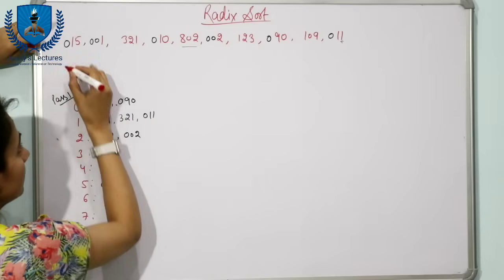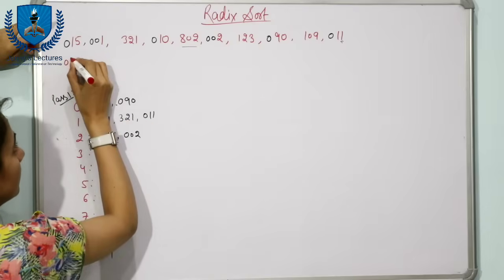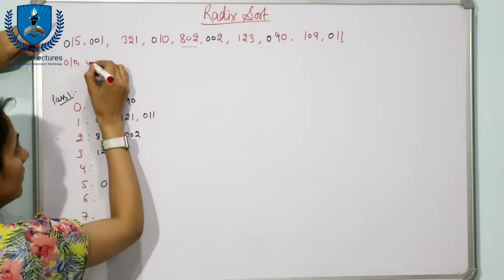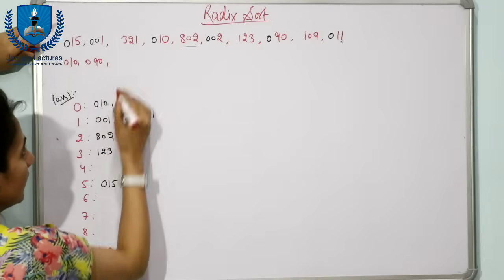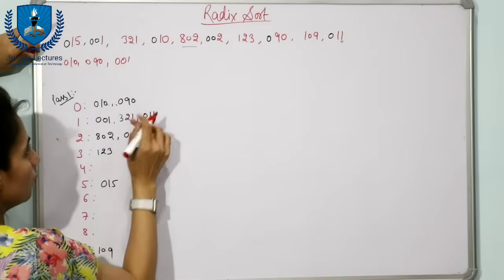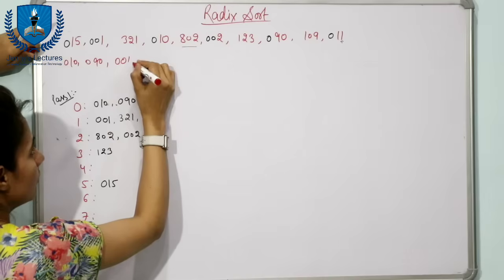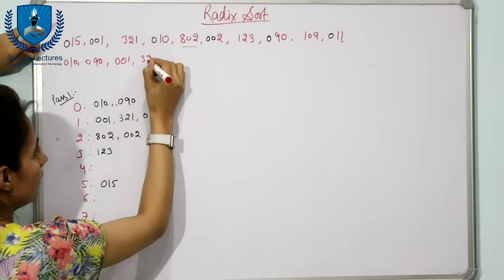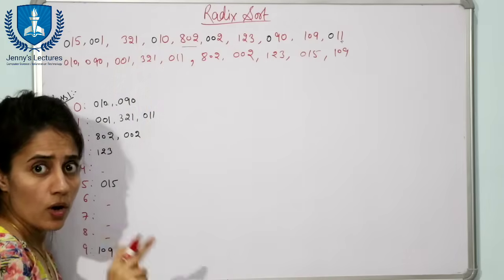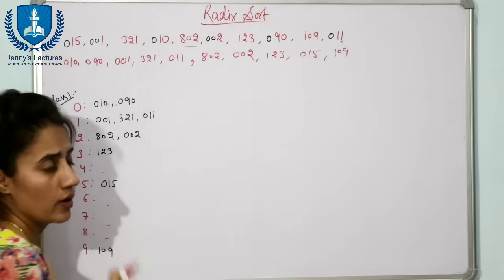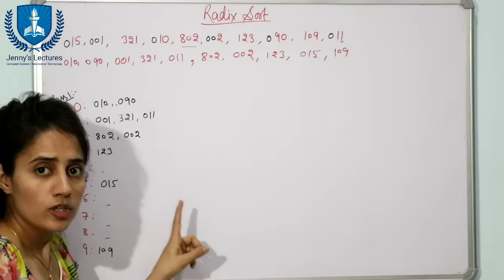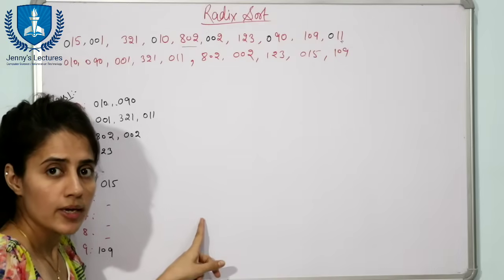After Pass 1, the data becomes: 010, 090, 001, 321, 011. Now after the first pass the data is in this order. One more thing to take care of: the number of passes equals the number of digits in the maximum number.